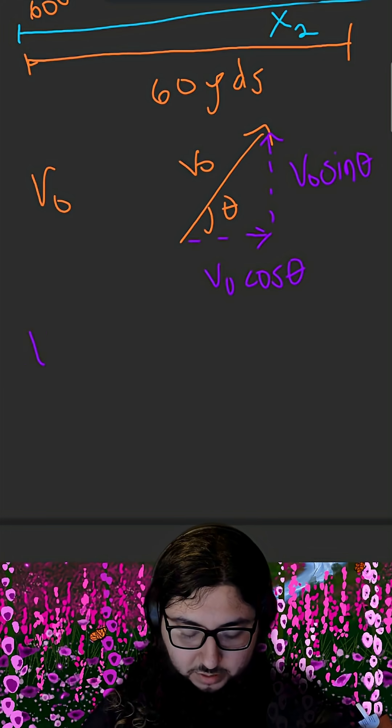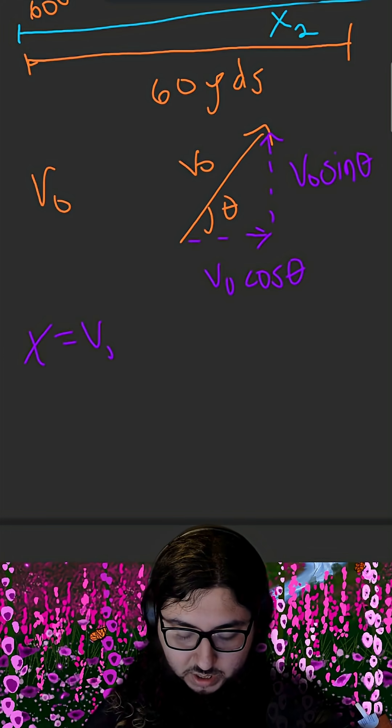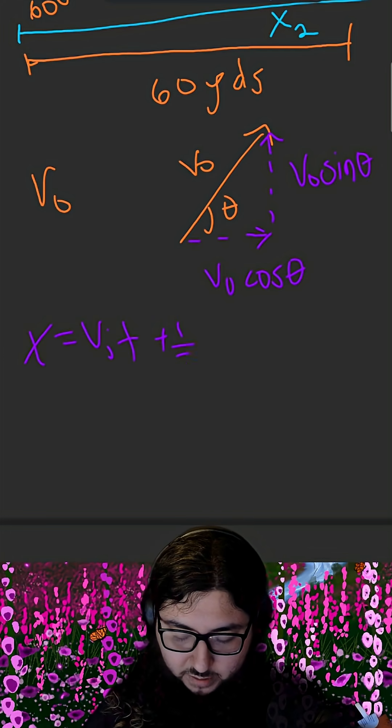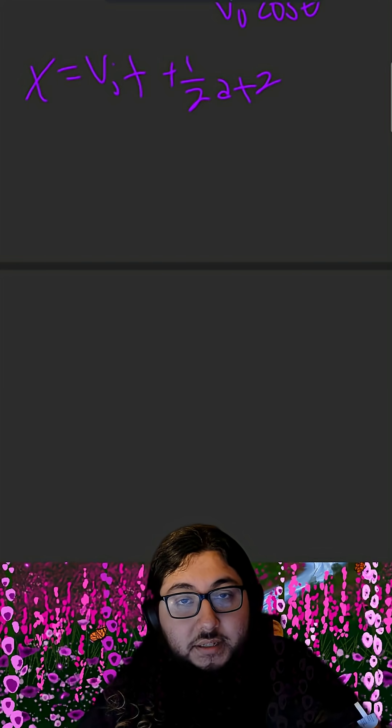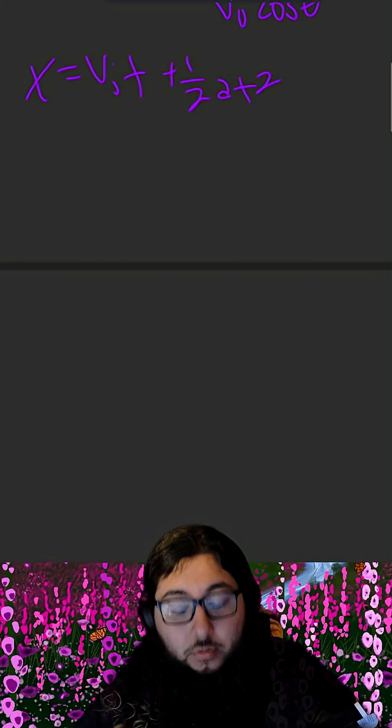To start, we can use the kinematic equation x is equal to v i t plus 1 half a t squared. Now remember, with the kinematic equations, you have to analyze the vertical and horizontal movement independently. We'll start with analyzing the vertical movement.